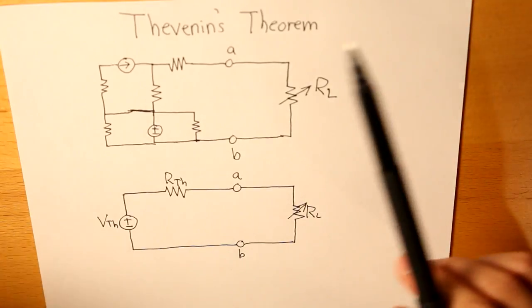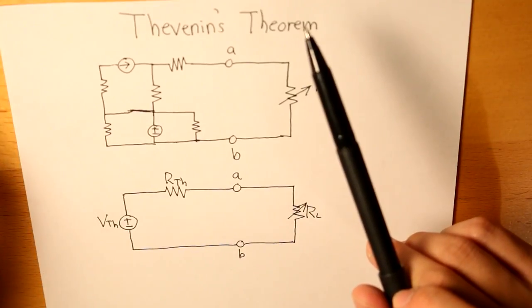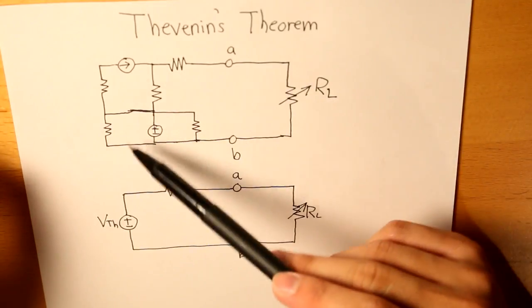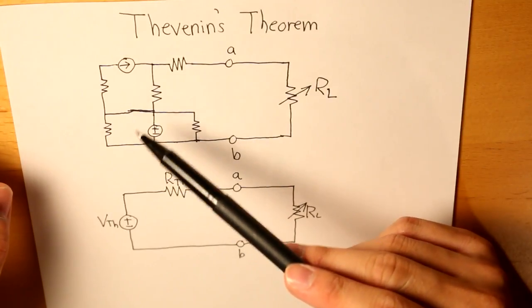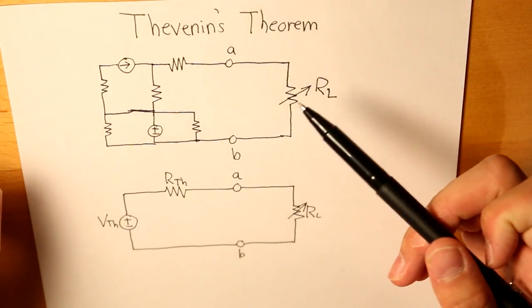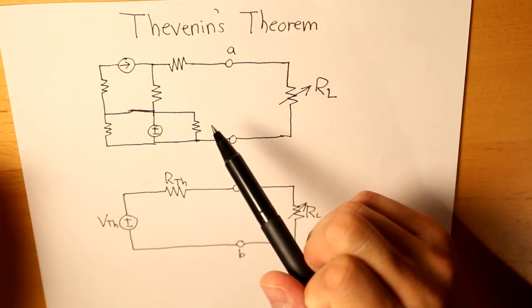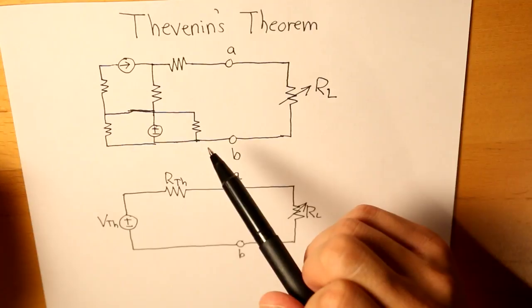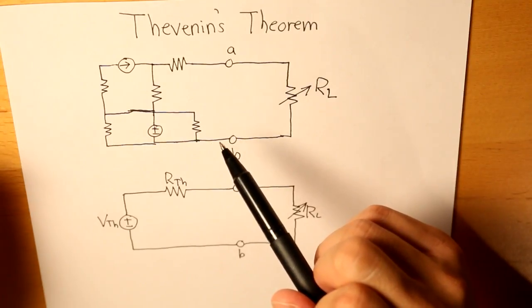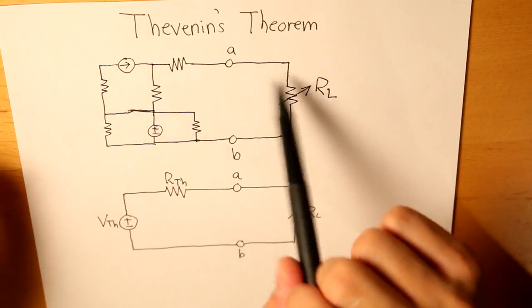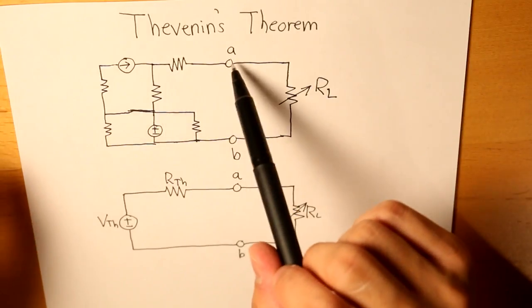The purpose of it is to decompose part of the circuit and to simplify it to an equivalent one where we only have one voltage source and then a resistor.